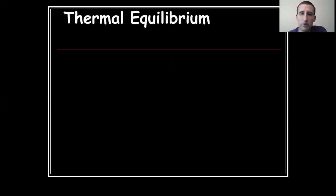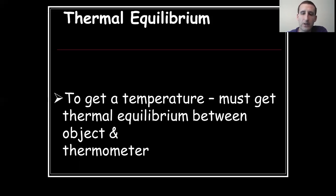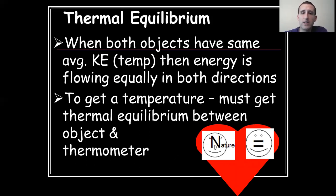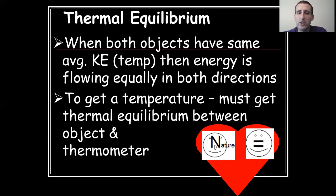Thermal equilibrium is when two objects reach the same average kinetic energy. They don't necessarily have the same total energy. For example, a glass sitting on a kitchen counter at thermal equilibrium with a 75-degree room is itself 75 degrees. The room has far more total energy than the glass, but the average energy per molecule is the same for both. At equilibrium, a thermometer on either would not change. There is still a flow of energy — it is still going both directions — but an equal amount flows in each direction.